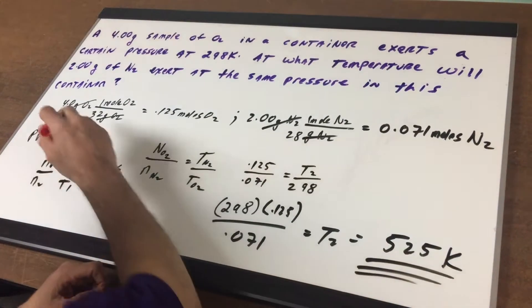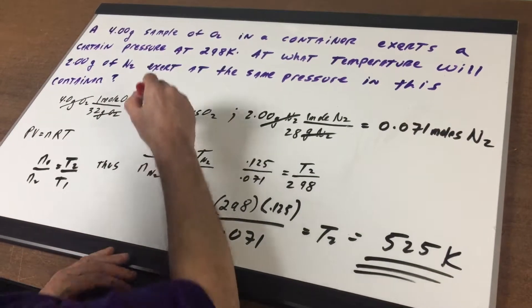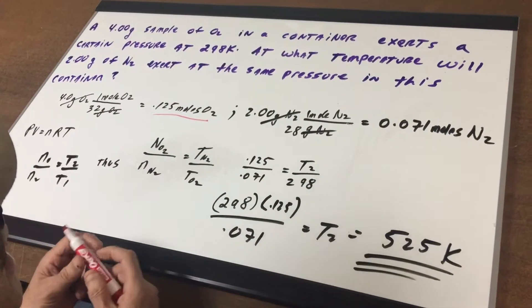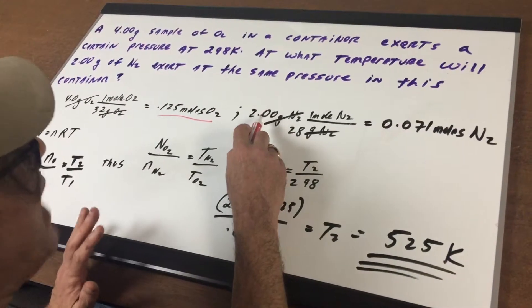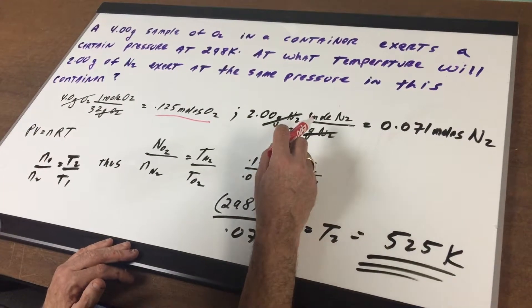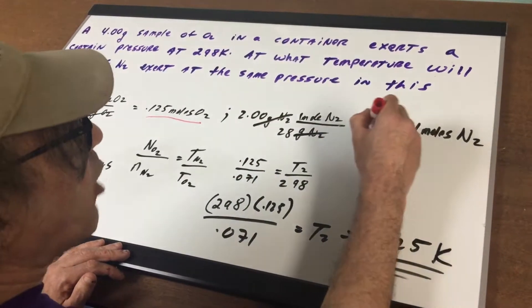When you take 4 divided by 32, we come up with 0.125 moles of oxygen. You do the exact same thing. You convert the grams of nitrogen into moles, and we come up with 0.71 moles of nitrogen.